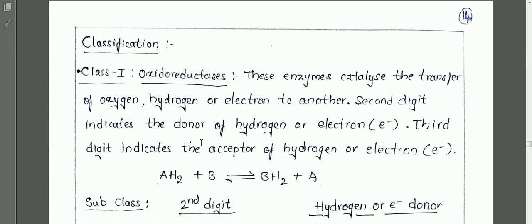The Enzyme Commission classified enzymes into six classes. The first class is oxidoreductases.